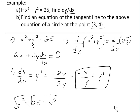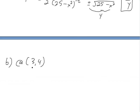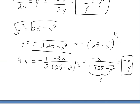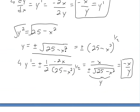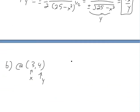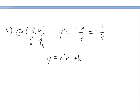Now let's look at Part B: find the equation of the tangent line to the circle at the point (3, 4), where 3 is x and 4 is y. Rather than using y equals plus or minus the square root of 25 minus x squared and then finding its derivative, we simply use our result from implicit differentiation: dy over dx equals negative x over y. Plugging in x equals 3 and y equals 4 gives a slope of negative three over four.